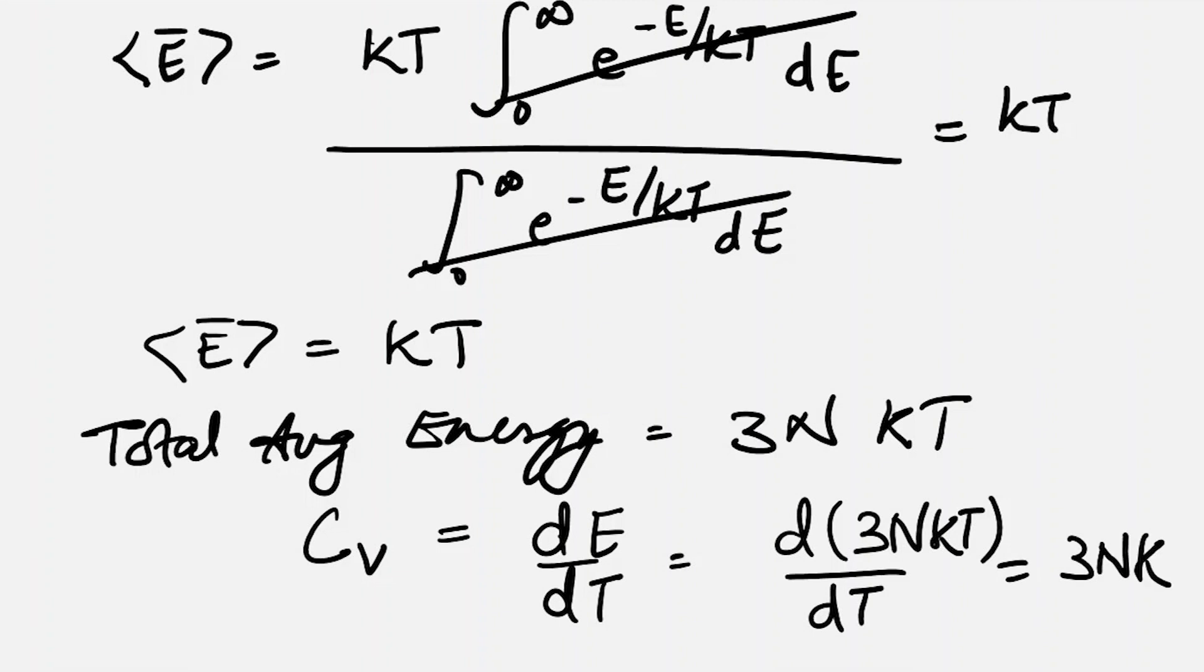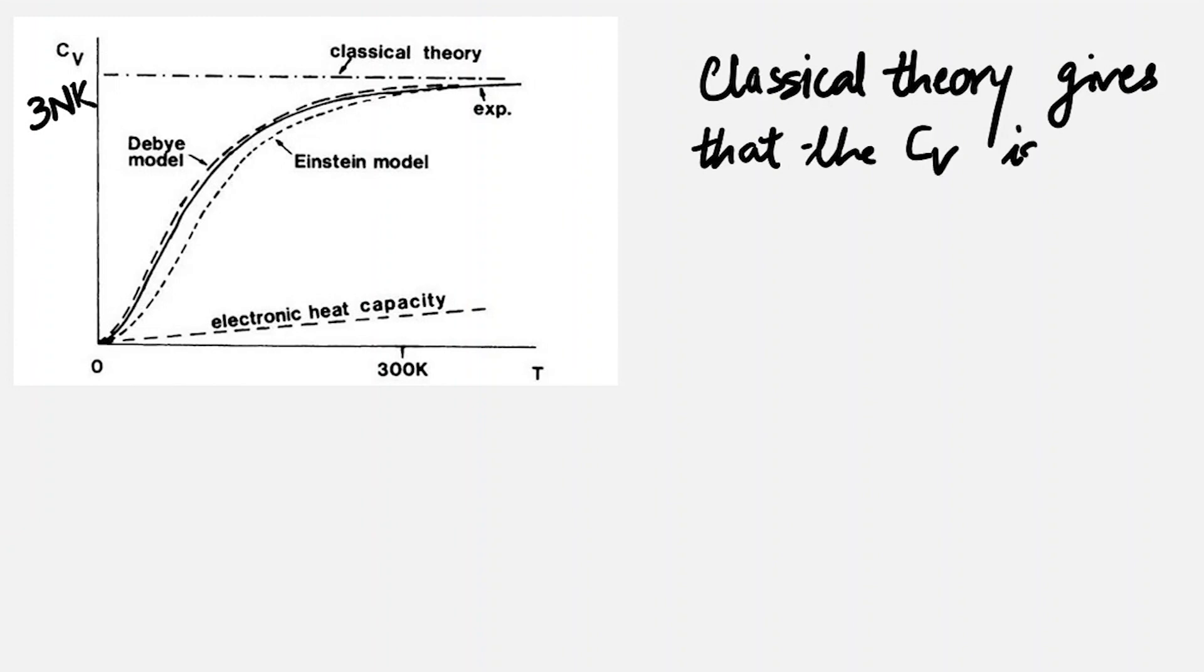Classical theory gives us that the heat capacity is independent of temperature. This is the result given by classical theory: CV equals 3Nk.